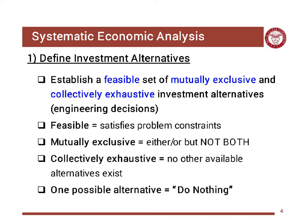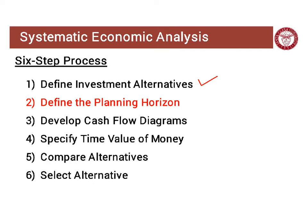It's either/or but not both, so you don't have overlap between them. One important alternative that most people overlook is 'do nothing' — we need to consider that maybe it's a hard problem to solve and we should just keep the status quo and not propose any solution.